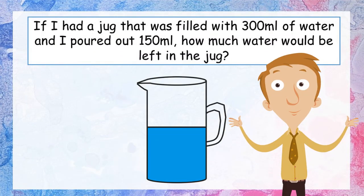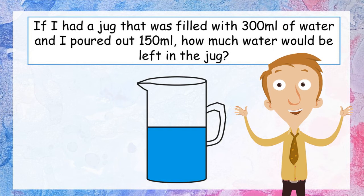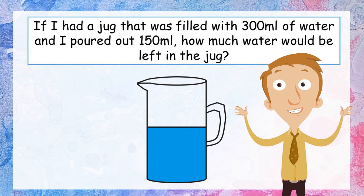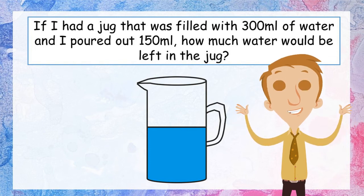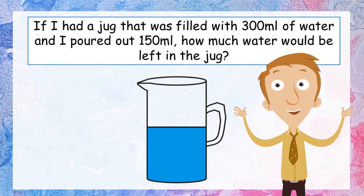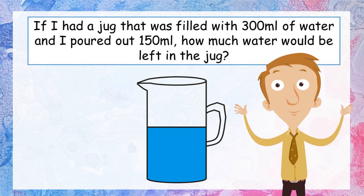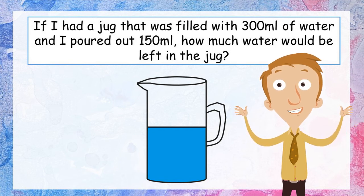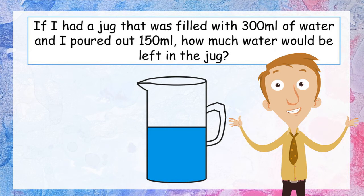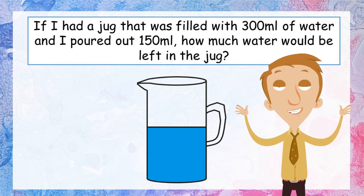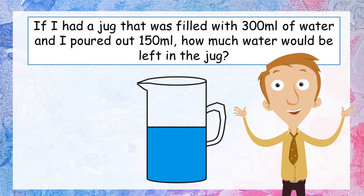Here is our first problem. If I had a jug that was filled with 300 millilitres of water and I poured out 150 millilitres, how much is left in the jug? Pause the video and see if you can figure out how to solve this one. When solving a word problem, the most important thing is to figure out what they actually want us to solve — that's the hardest part. This is actually quite an easy sum, as long as you can see it in the words.